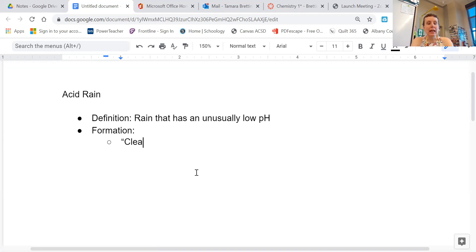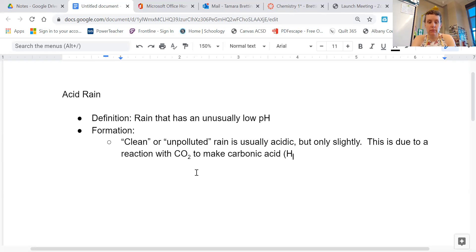I'm going to say clean or unpolluted rain is usually acidic. That's not really something that we think about, but only slightly. Rain, regular rain just falling from the sky, just water is going to be slightly acidic. This is due to a reaction with carbon dioxide, CO2, to make carbonic acid, which is H2CO3. So as the rain falls through the air, it reacts with the carbon dioxide a little bit. It dissolves some of that carbon dioxide and it forms carbonic acid, which just brings its pH down a little bit below neutral.